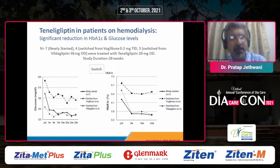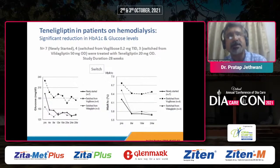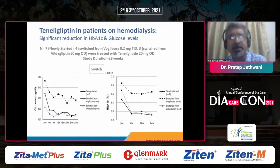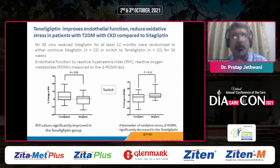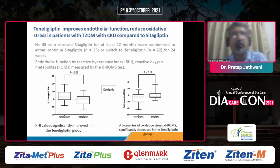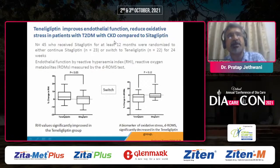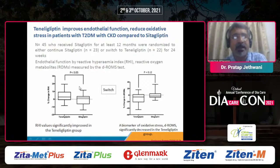Teneligliptin can be used in CKD, including in hemodialysis patients — whether newly started or switched from acarbose — with demonstrated decreases in HbA1c, confirming its effectiveness and safety. There is also evidence that it improves endothelial function and reduces oxidative stress in patients with type 2 diabetes with CKD, compared to sitagliptin.